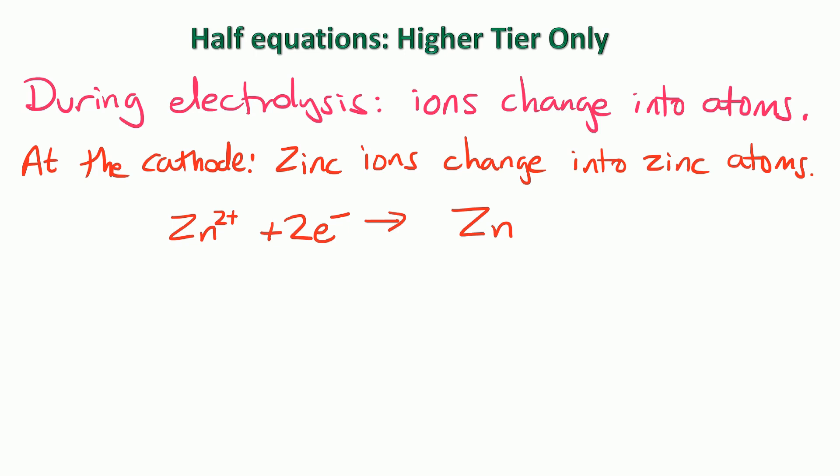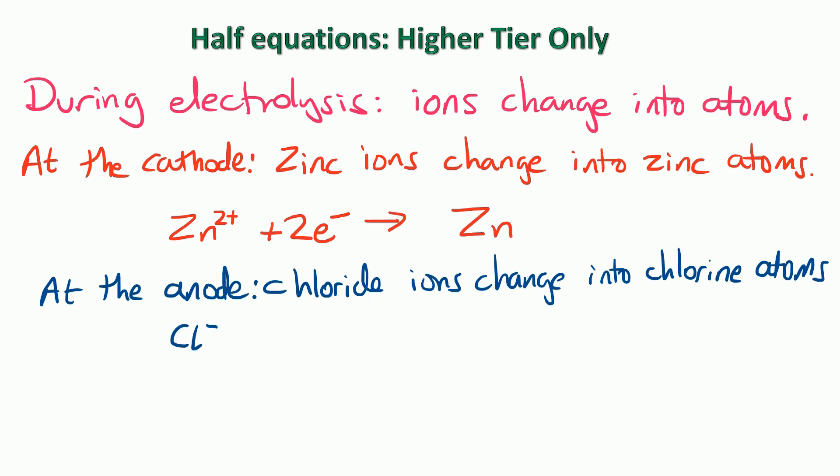At the anode we've got chloride ions changing into chlorine atoms. So here's the chloride ions changing into chlorine atoms. And that means we've only got one electron to consider because it's 1- charge. So does the electron go on the left or the right? Well in this case we're going to put the electron on the right so that the charge in the equation balances. That means that we've got 1- charge on the left and we've also got 1- charge on the right. If we tried to put it on the left we'd have 2- on the left and no charge on the right. So it must go on the right in this case. And once again at the anode the electron will always go on the right hand side of the equation.